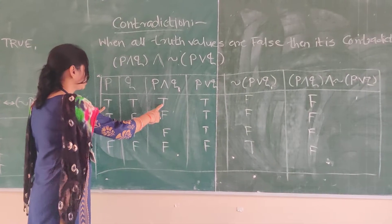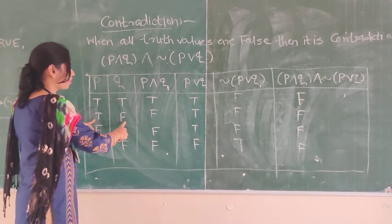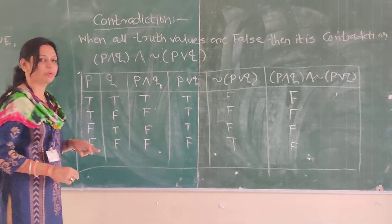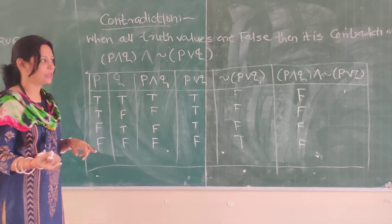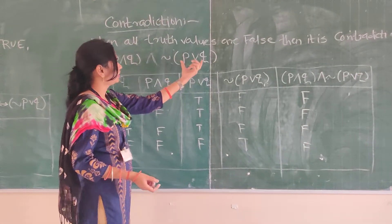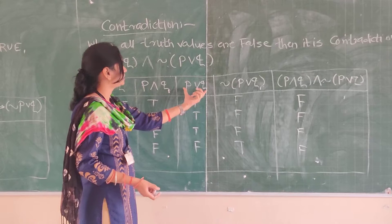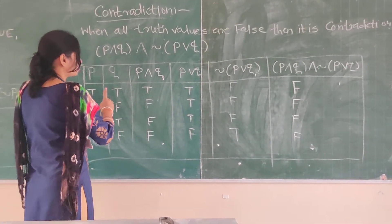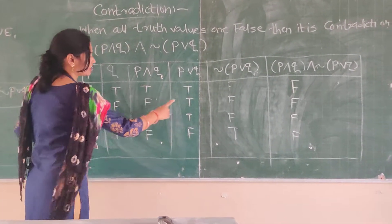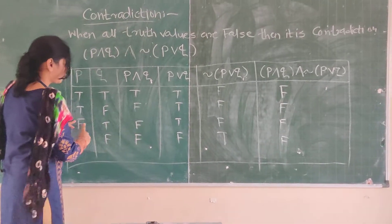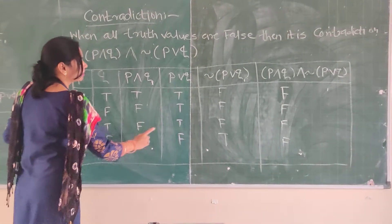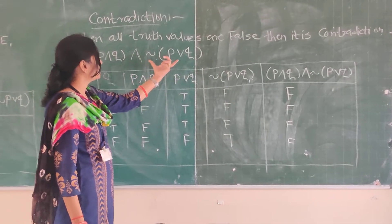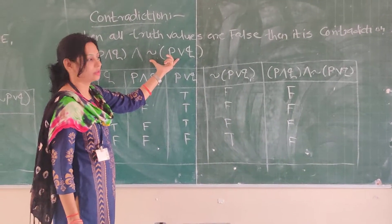Setting up the truth table with p and q values: T, T, T, T, F, F, F, F and T, T, F, F, T, T, F, F. Now find p or q using addition (disjunction): T, T, T, T, T, T, F. Then find negation of p or q: F, F, F, F, F, F, T.